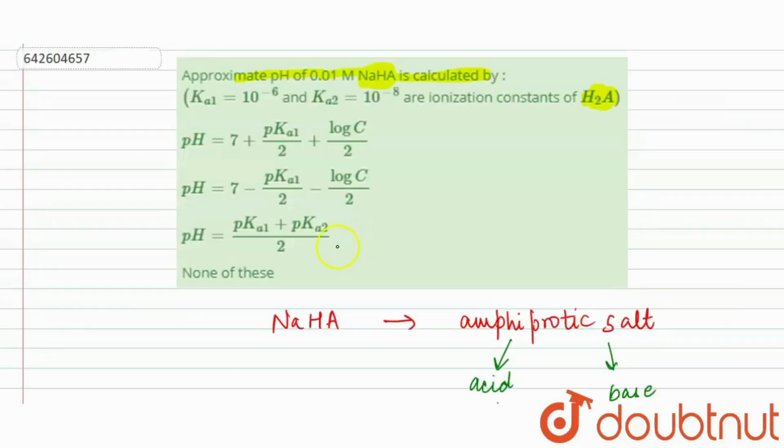So here our answer is the third one. Third one is our correct option, because here we are given Ka1 and Ka2. From that we can calculate pKa1 and pKa2, but here it's not needed because we need the answer in terms of this only. So the answer is pH is equal to (pKa1 + pKa2) upon 2.